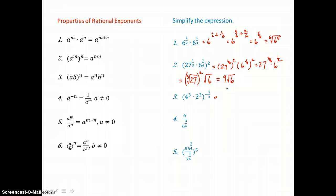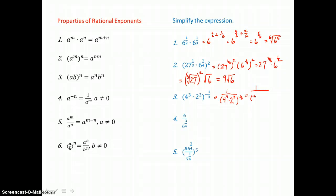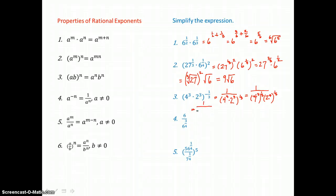In our third example, we have a negative exponent, which we'd want to get rid of by moving that product to the denominator of a fraction and raising it to a positive 1 third power. Then get rid of parentheses again by raising every factor inside parentheses to that power outside. So I have 4 cubed raised to the 1 third power times 2 cubed raised to the 1 third power. Double powers we multiply, so we're going to have 1 over 4 to the 3 thirds, which is 1, times 2 to the 3 thirds, which is 2. And that's going to simplify to 1 eighth.